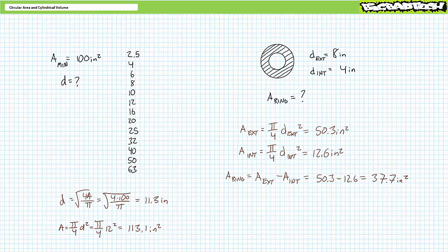For problem two: determine the surface area of a ring-like shape formed by a larger exterior circle with a diameter of 8 inches and a smaller interior circle with a diameter of 4 inches. The larger exterior circle has a surface area of roughly 50.3 square inches; the smaller interior circle has a surface area of roughly 12.6 square inches. Substituting these values into the ring area formula — outer minus inner — gives a ring-like area of roughly 37.7 square inches.